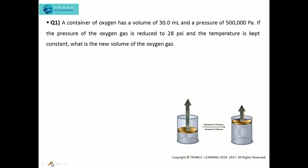For the first question, we should recall the steps: reading the question properly and analyzing what is given and what needs to be found. A container of oxygen has a volume of 30 milliliters and a pressure of 500,000 Pa.